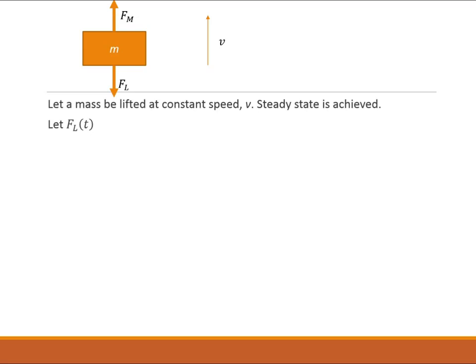Now let's say that this Fl is a function of time. We've reached steady state and then Fl begins to fluctuate a little bit. Then there's this total F which is equal to Fm, which is a constant, minus Fl, which is now a function of time.